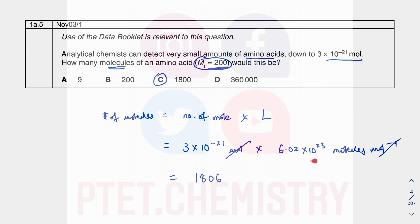The calculation gives 1806, so realistically the closest answer is 1806. If they used 6 × 10²³ instead of 6.02 × 10²³, you'd get exactly 1800. The molecular mass information is there to confuse you — it's not needed if you know the moles-to-particles relationship.